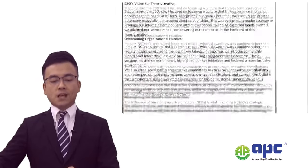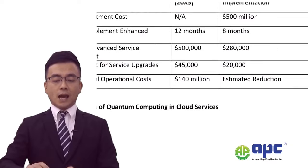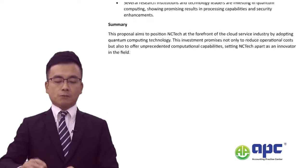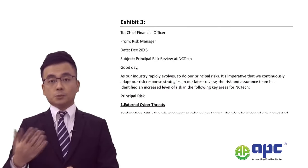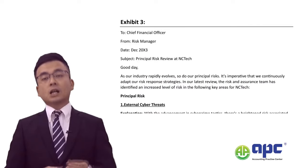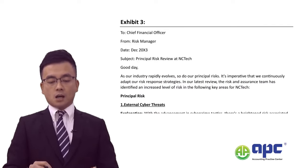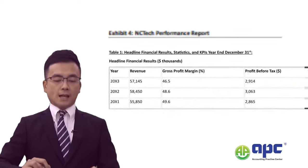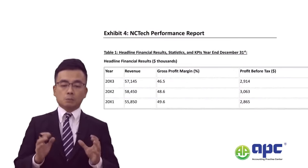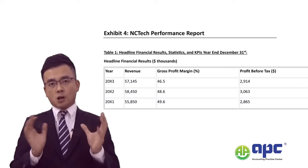In this mock exam, I've written several exhibits. For example, exhibit number 1, exhibit number 2, and exhibit number 3 about the principal risk - the external cyber attack onto NCTech company. Finally, exhibit number 4 gives us the NCTech performance report. Before we move any further, let me ask you a question.